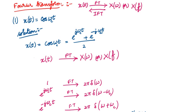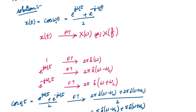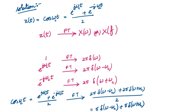Now we move to the problem. The problem is x(t) = cos(ωct). We know that cos(ωct) can be expressed as (e^(jωct) + e^(-jωct)) / 2. We are going to use Fourier transform pairs rather than the standard Fourier transform formula.